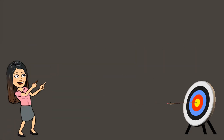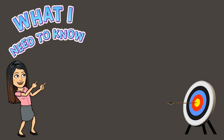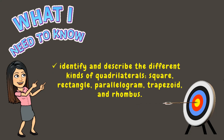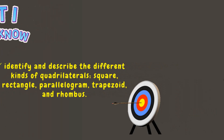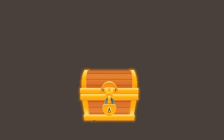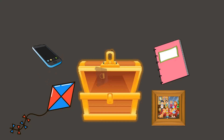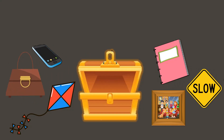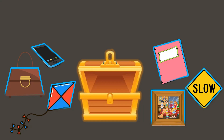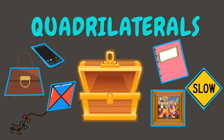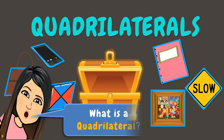Good day students, welcome back to my classroom. For today's lesson you will learn to identify and describe the different kinds of quadrilateral, which are square, rectangle, parallelogram, trapezoid, and rhombus. Let's begin — we have here a treasure. Let's take a look at what's inside. There you go! What can you observe? We can see that these objects have four sides, which are examples of quadrilaterals. But wait — do you know what quadrilateral means?